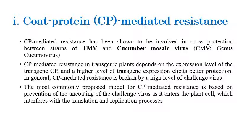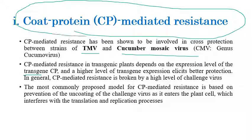Coat protein-mediated resistance has been shown to be involved in cross protection between strains of tobacco mosaic virus (genus Tobamovirus) and cucumber mosaic virus (genus Cucumovirus). In transgenic plants, coat protein-mediated resistance depends on the expression level of the transgene — higher transgene expression elicits better protection against plant viruses.